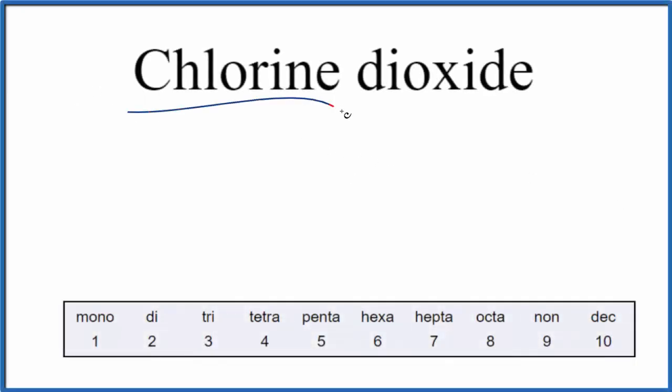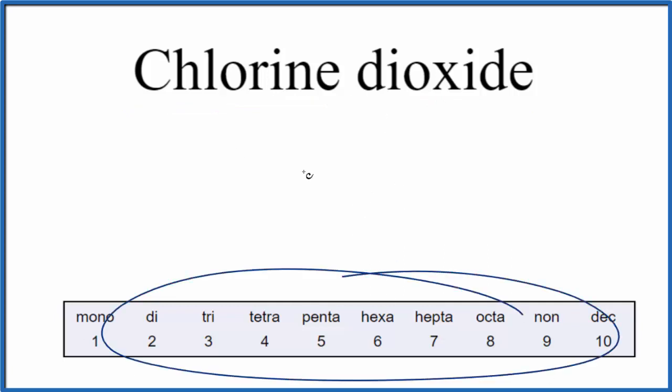To write the formula for chlorine dioxide, the first thing we need to recognize is we see this 'di' in the name. That means we'll have a molecular compound, also called a covalent compound. We have these two non-metals here together, that gives us a molecular compound, and we use these prefixes to write the name.